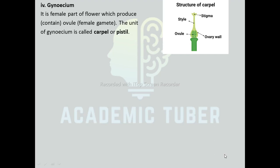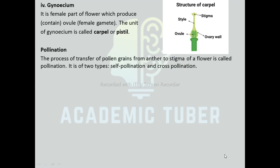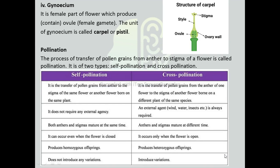Gynoecium is the female part of the flower which produces or contains ovules, the female gamete. The unit of Gynoecium is called a carpel or pistil, which is divided into three parts: stigma, style, and ovule. Pollination: The process of transfer of pollen grains from anther to stigma of a flower is called pollination. It is of two types: self-pollination and cross-pollination. Self-pollination is the transfer of pollen grain from anther to the stigma of the same flower. Cross-pollination is the transfer of pollen grain from the anther of one flower to the stigma of another flower of the same species. For self-pollination, pollinating agents are not required, whereas for cross-pollination, external pollinating agents are required. In self-pollination, both anther and stigma mature at the same time, but in cross-pollination they may mature at different times.